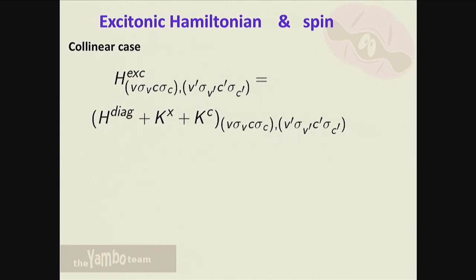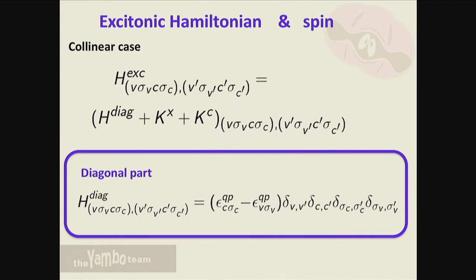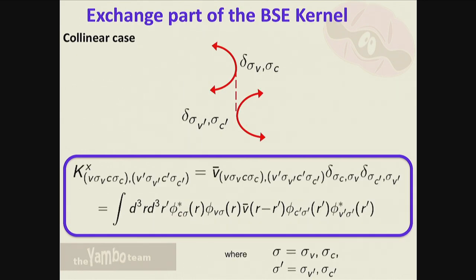Now we look at the excitonic Hamiltonian with explicit spin indices, starting with the collinear case useful for spin-polarized systems. In the diagonal part, there is conservation of spin: sigma_c sigma_c' and sigma_v sigma_v' are preserved. For the exchange part, the diagram shows conservation of the spin component, assuming the Coulomb potential does not depend on spin. Writing the matrix element of the exchange part - v-bar depending on the definition - you end with the same spin here and the same spin there.